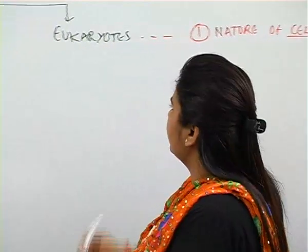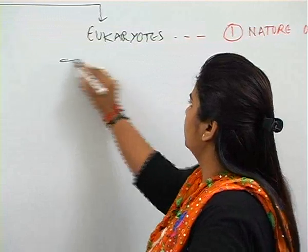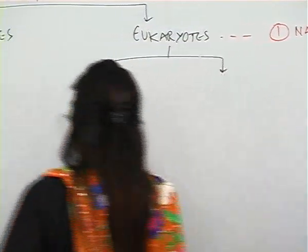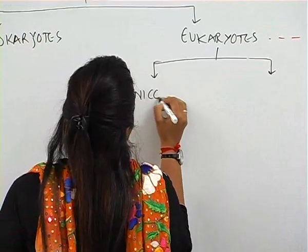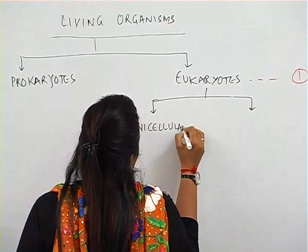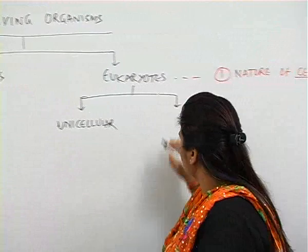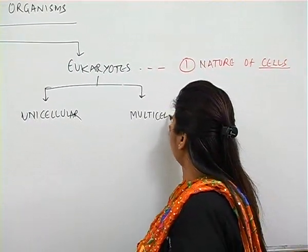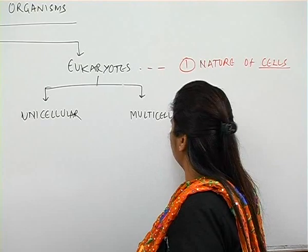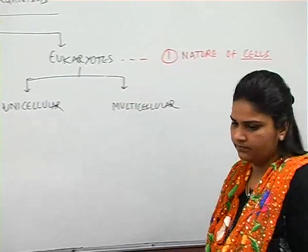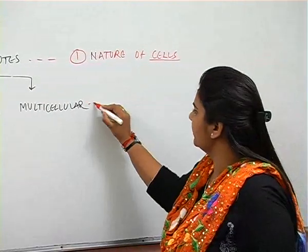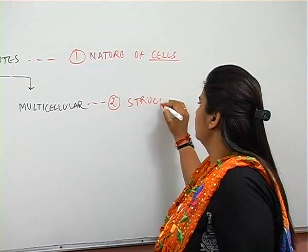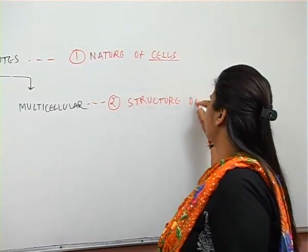Now we will see the second step of classification. Eukaryotes are further classified as unicellular, made up of one cell, and multicellular, made up of many cells. This is the second step, based on the structure of organisms.